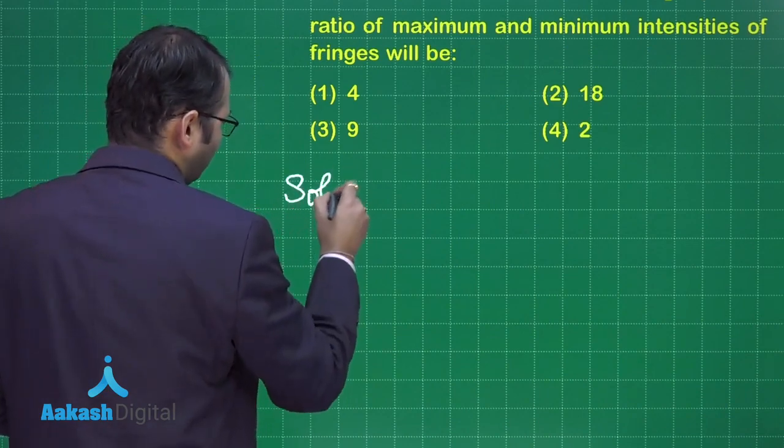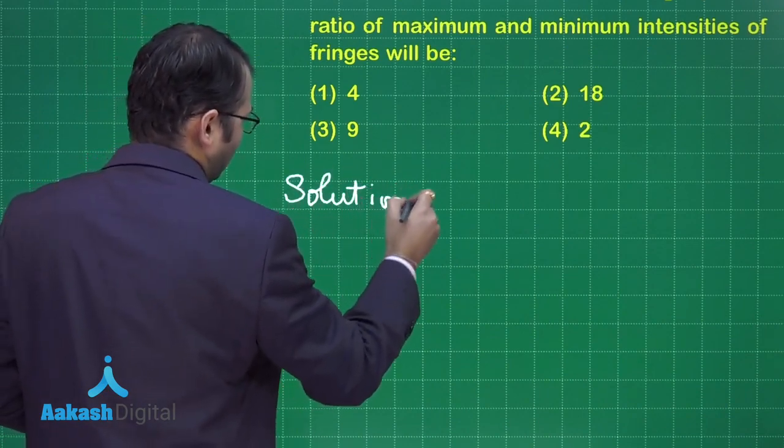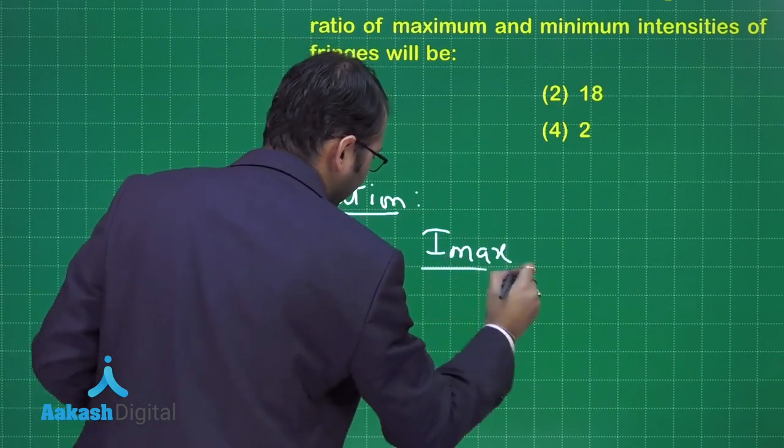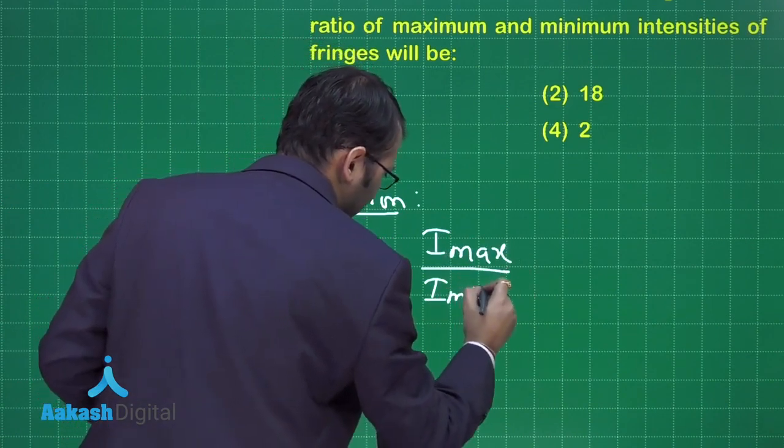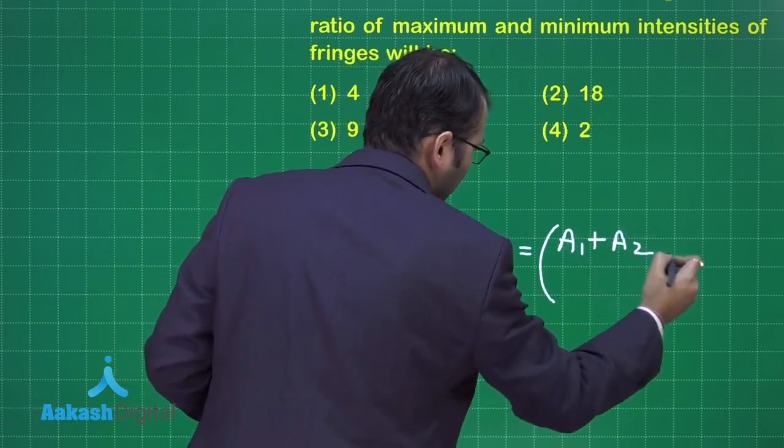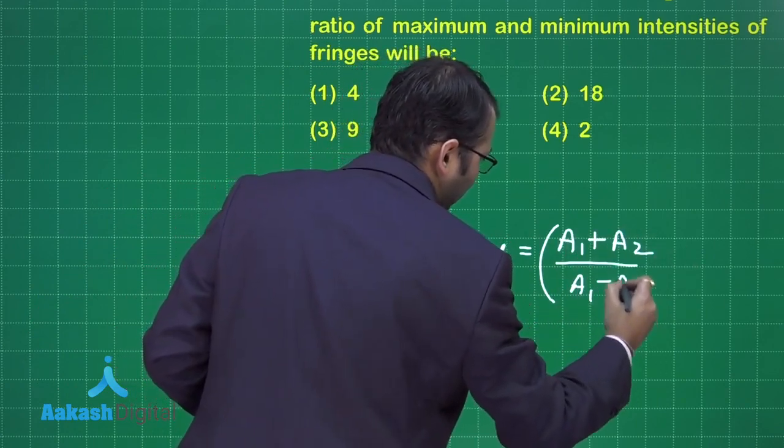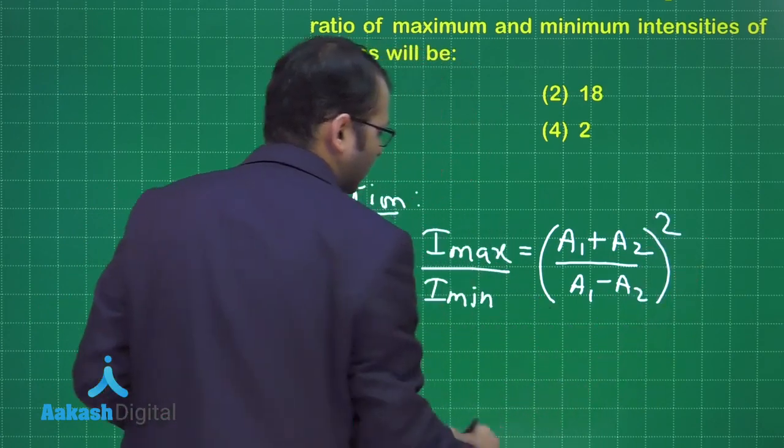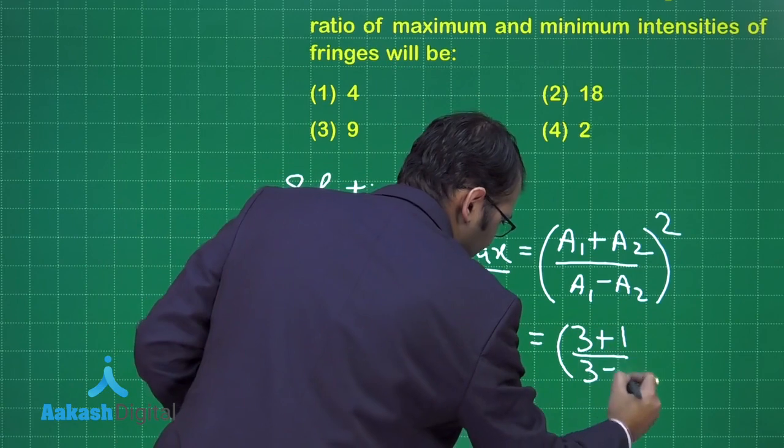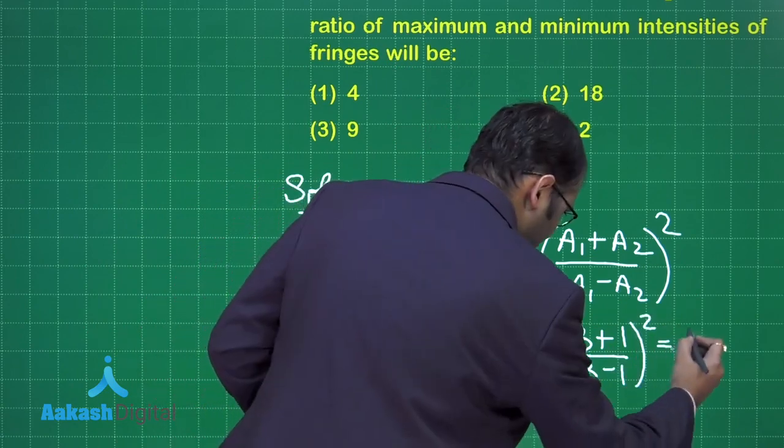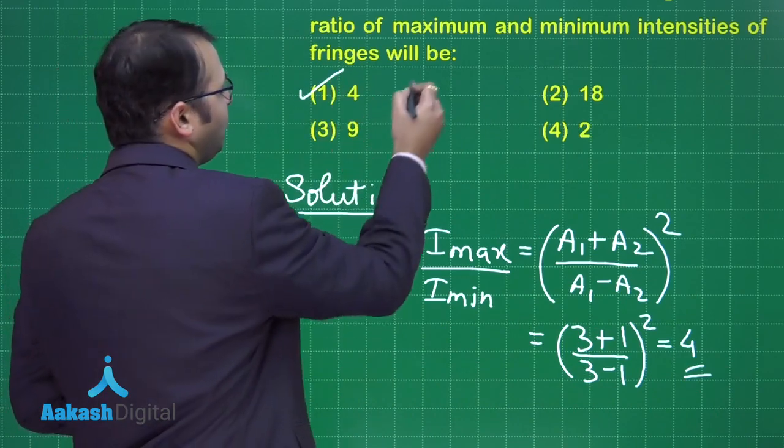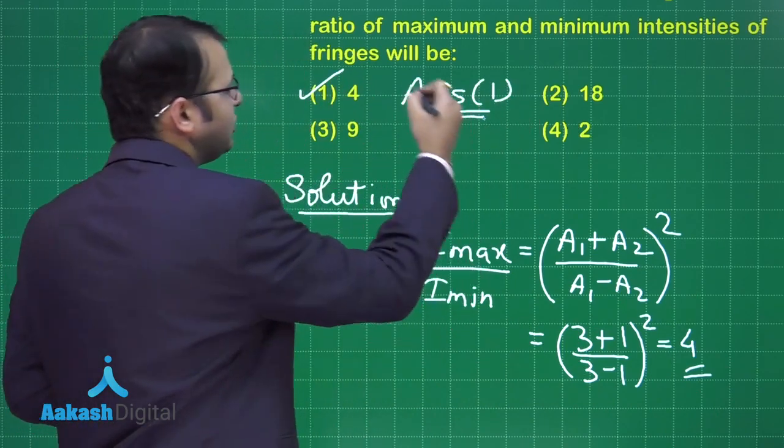What would be the formula? That would be I max by I minimum equals to a1 plus a2 divided by a1 minus a2 whole square, and that would be 3 plus 1 divided by 3 minus 1 whole square equal to 4. Let's see which is the best suited option. Option number 1, pretty simple and easy question.